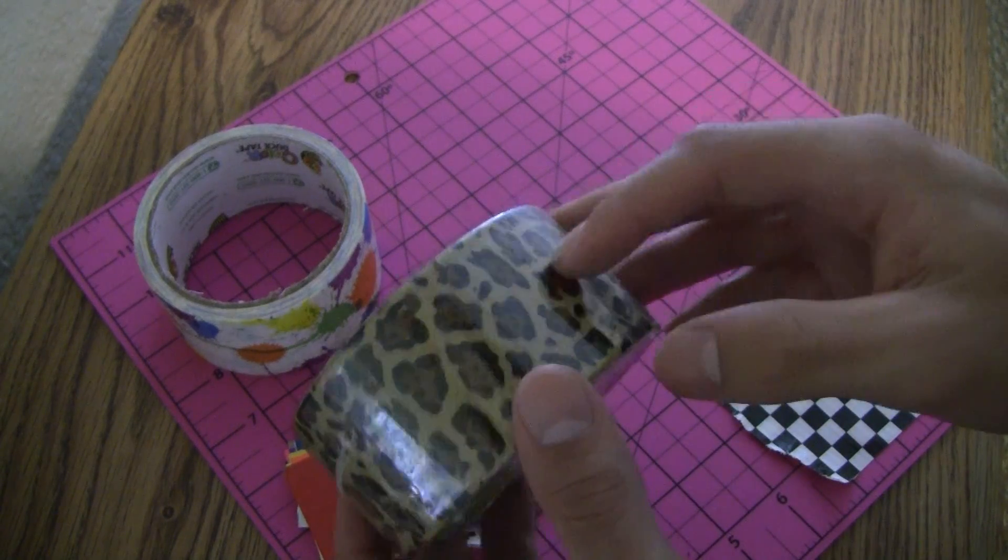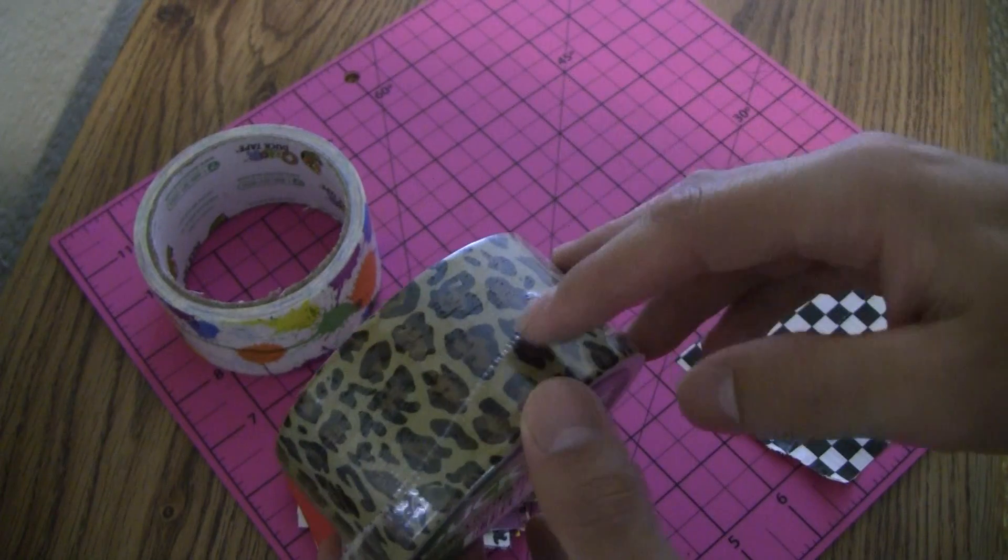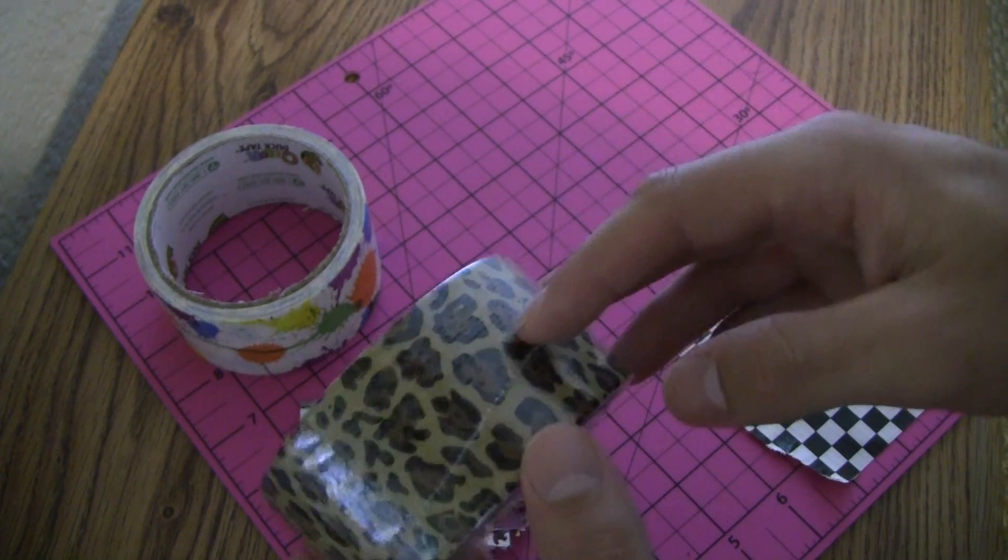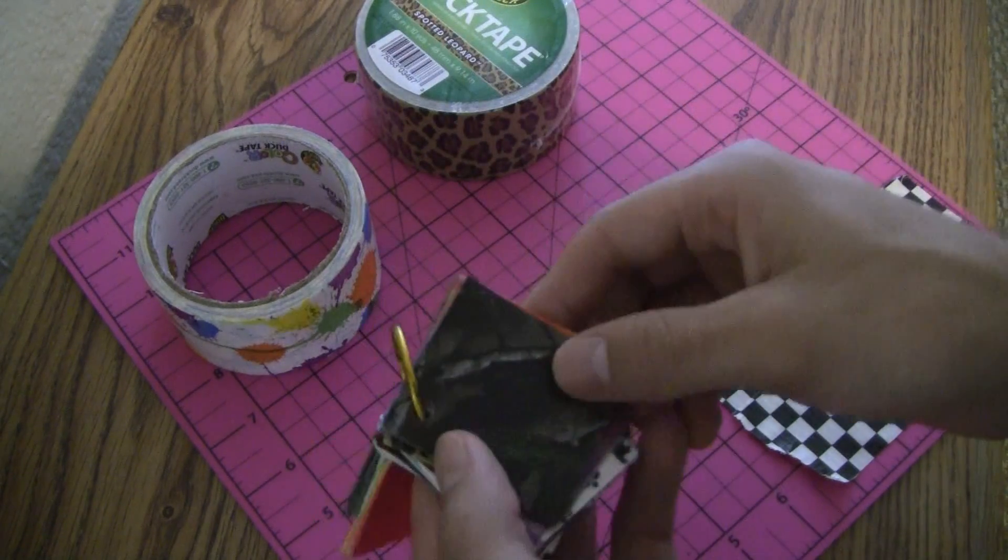The same thing goes for the leopard. I mean the leopard is very similar all the way around. So you can try to line it up but it really looks fine if you just stick it together and usually it will blend very well together just like that. Let's take a look at some of the other ones here.